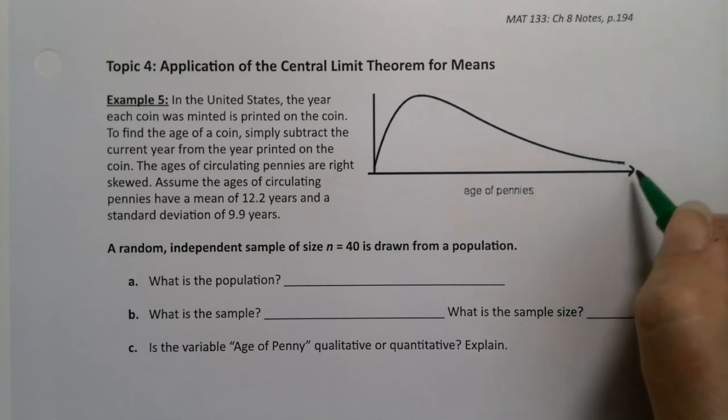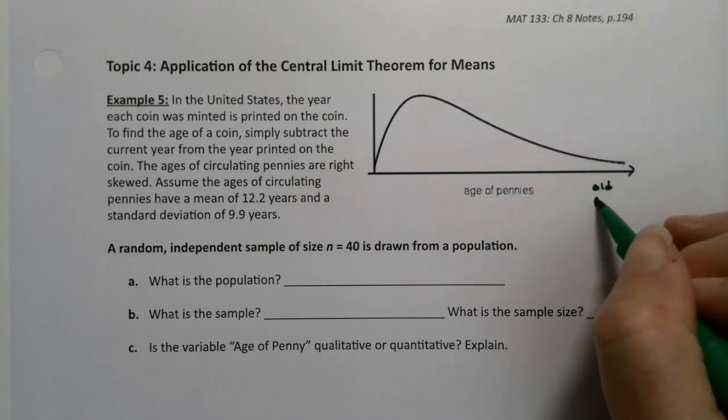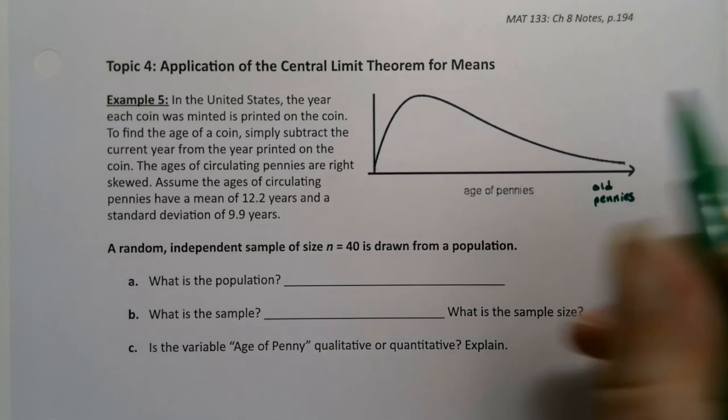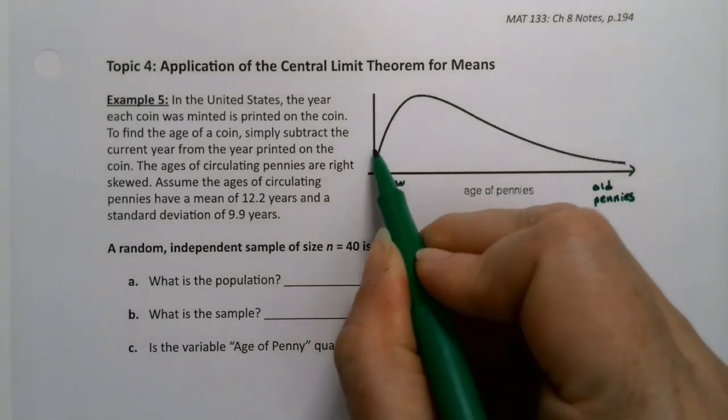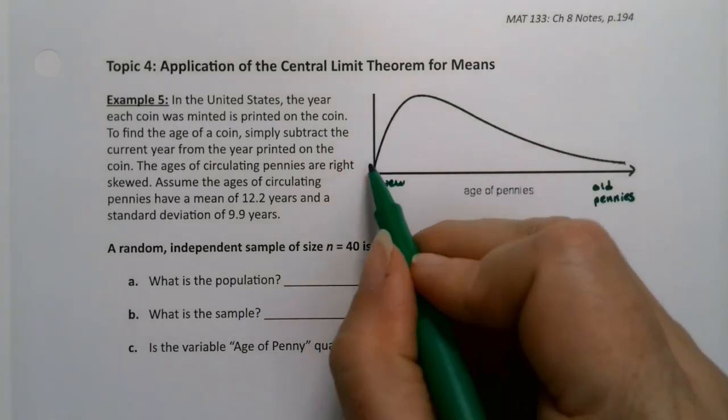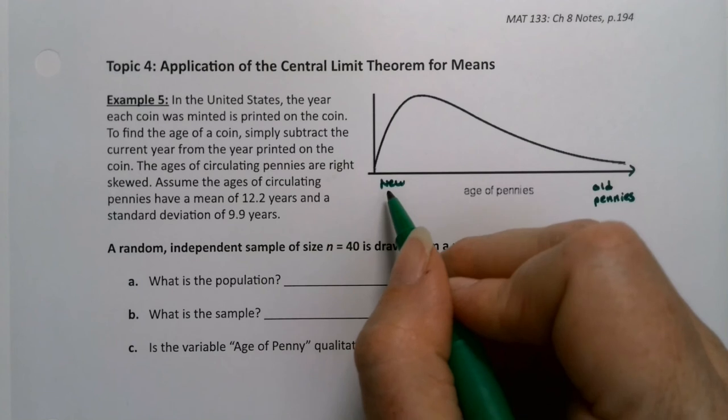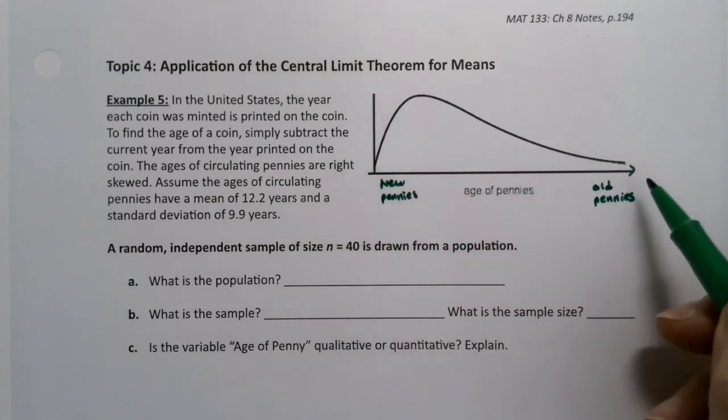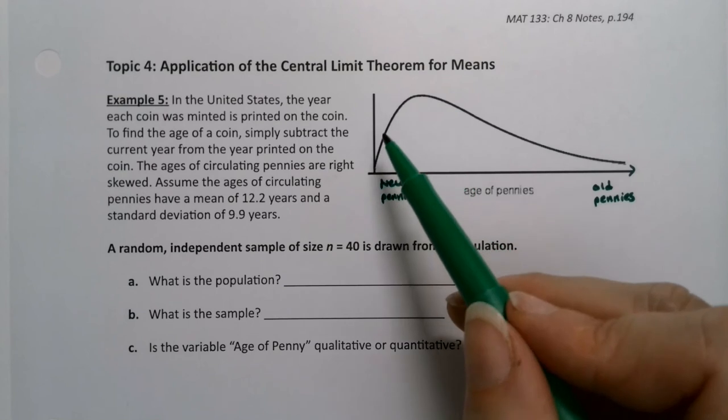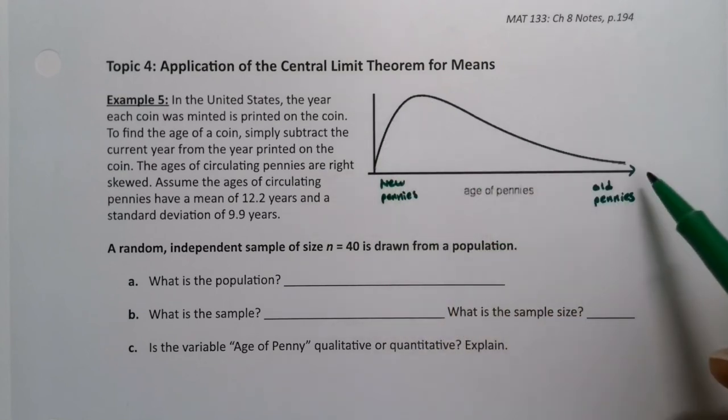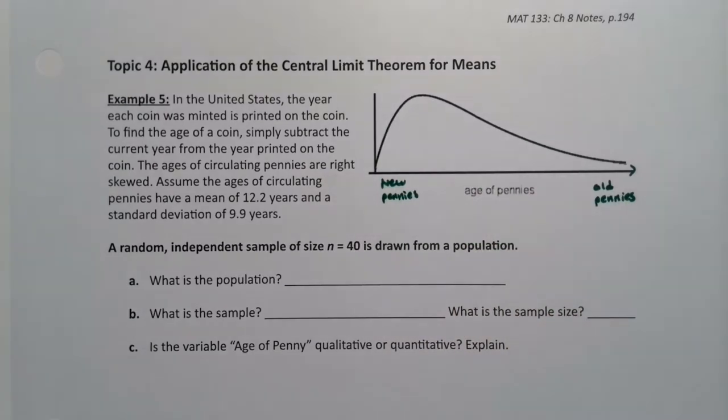So over here, for example, we have old pennies. And over here we have new pennies. And at the very beginning, it's very small because in any one year, you're not printing that or minting that many pennies. So we have new pennies over here, old pennies over here. There's a peak in the first 25, 30 years, and then it tapers off.